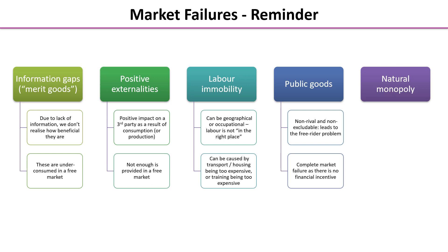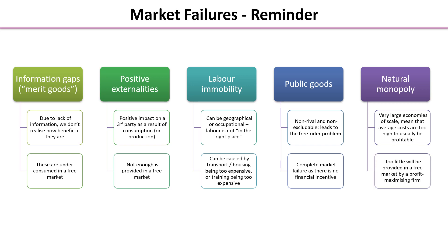Last but not least, we're going to look at natural monopoly. This is an industry that has enormous economies of scale that are achievable, but the market can only achieve some or partial economies of scale, so the average cost or unit cost tends to be too high for the firm to be profitable, and this will lead to under-production by that firm.